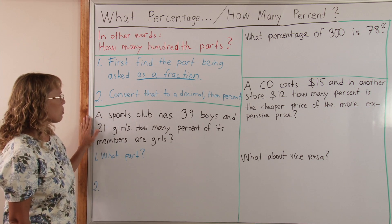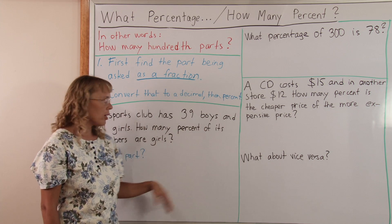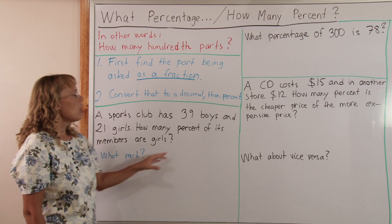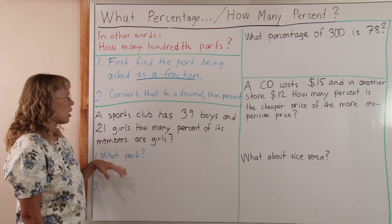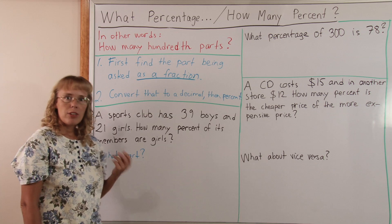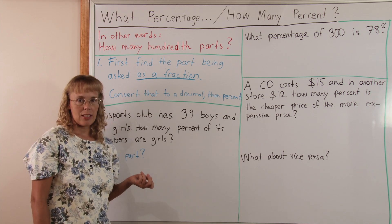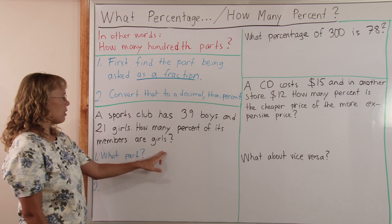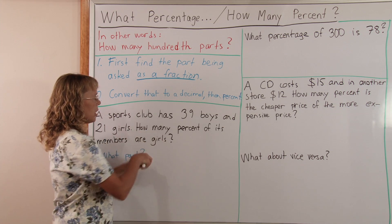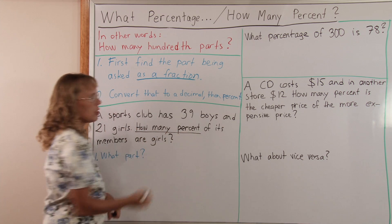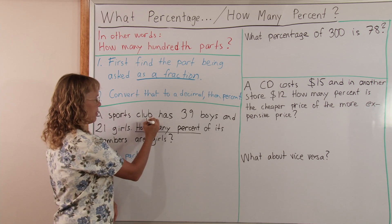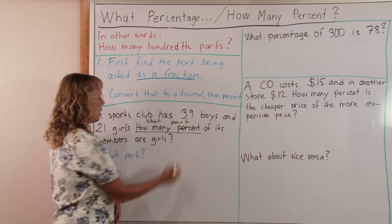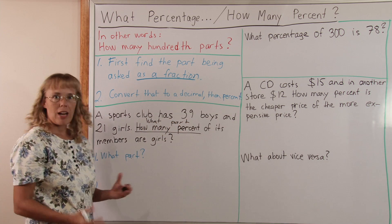Here's a question: A sports club has 39 boys and 21 girls. How many percent of its members are girls? First we will find what part are girls — what part of its members are girls? So instead of 'how many percent,' change this question to 'what part?' or 'what fractional part are girls?'